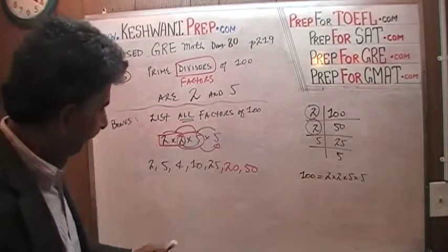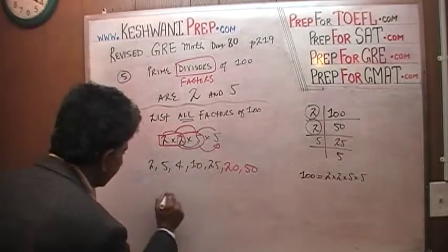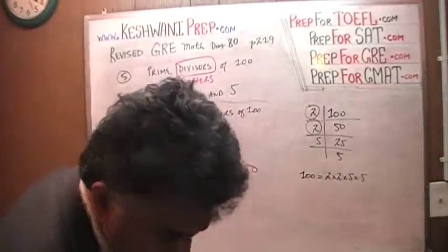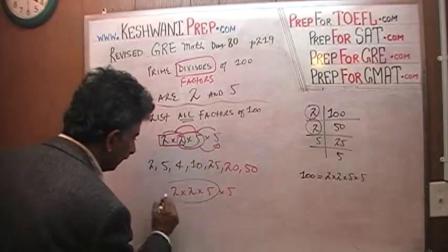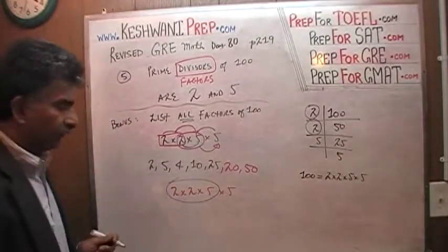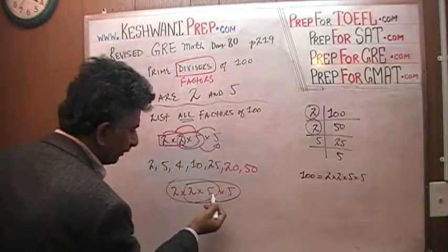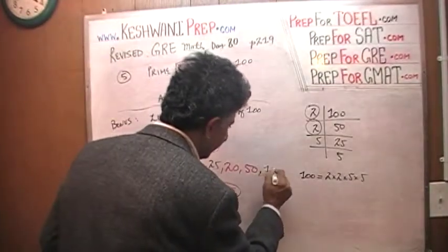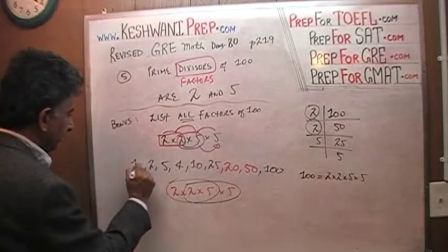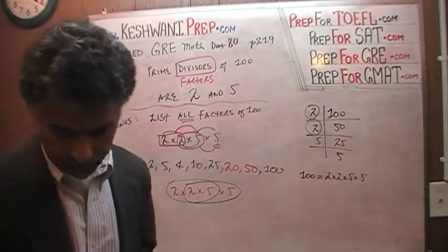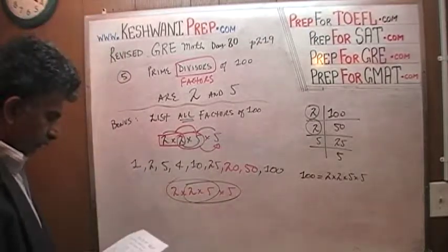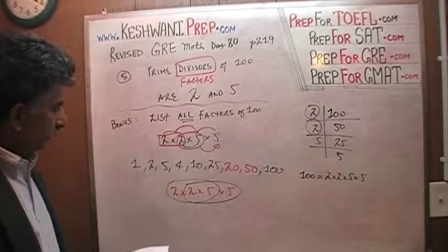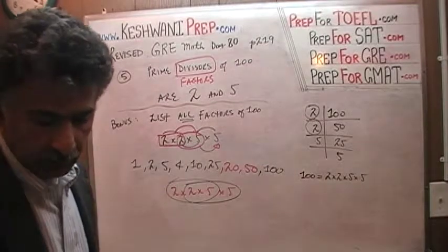Finally, we take care of the triples. 2 times 2 times 5 times 5 — there are only 2 possibilities for a triple: 4 times 5 is 20, which we already have, and 25 times 2 which we also already have. The only things left are 1 and 100 itself. So listing them in order: 1, 2, 4, 5, 10, 20, 25, 50, and 100. And that's about it.